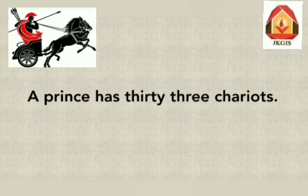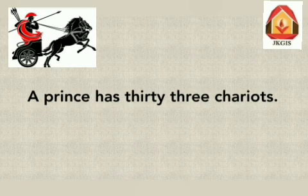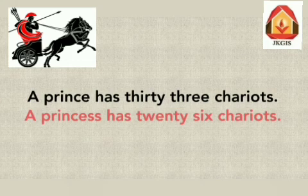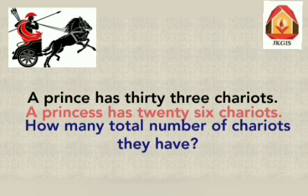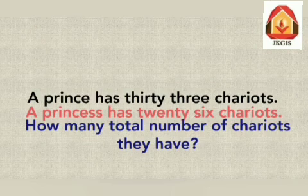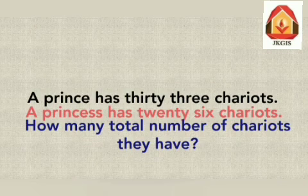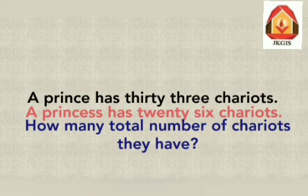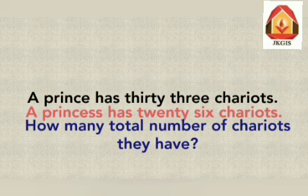Now let us read another word problem. A prince has 33 chariots. A princess has 26 chariots. Total number of chariots they have. In this problem, prince belongs to masculine gender and princess belongs to feminine gender. A chariot moves on land, so it is a land transport.